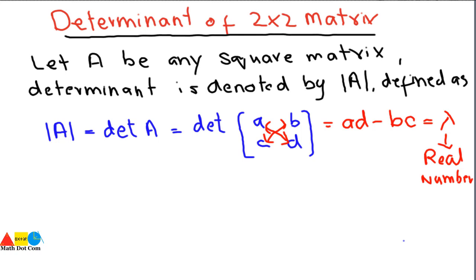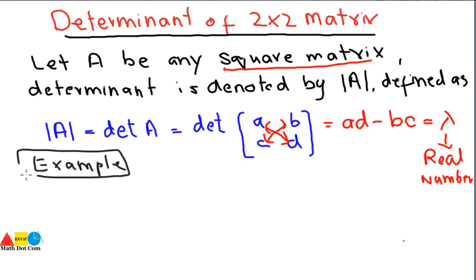So the determinant is found by multiplying the elements in this cross pattern and then subtracting the pairs to get a single real number out of those four elements. Keep in mind that the matrix must be a square matrix. Let's have an example: if you are given the matrix A = [[2, 5], [-3, 4]], how will you find its determinant?